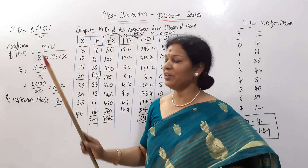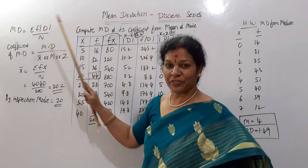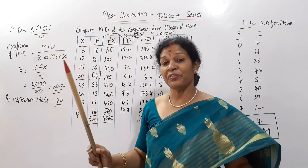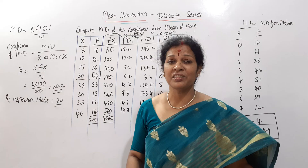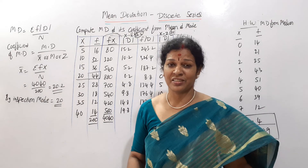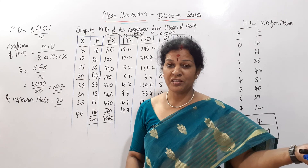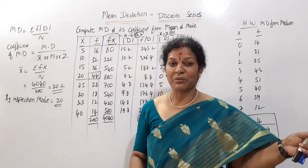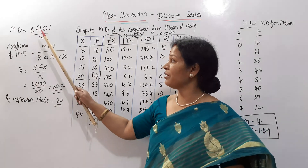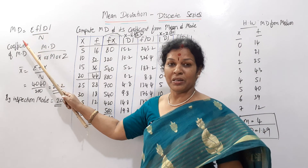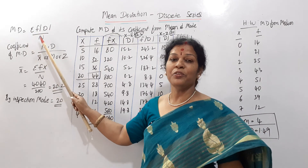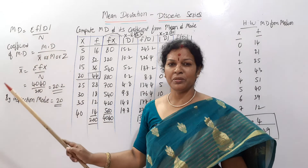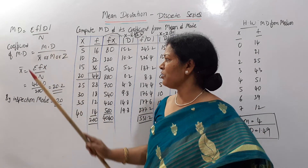We are simply adding f — sigma f into mod d — because frequency is present in discrete series. In individual series this frequency was not there, but now we have frequency, that is why we are adding it: sigma f into mod d by n. The coefficient of mean deviation formula remains the same, no change at all.